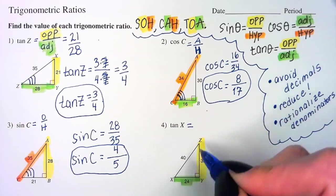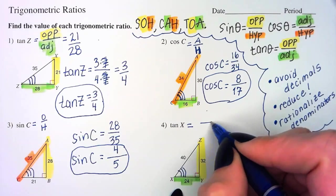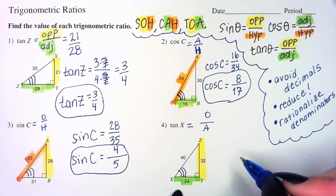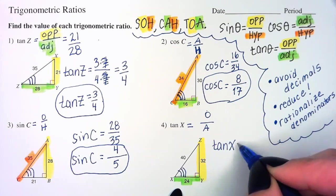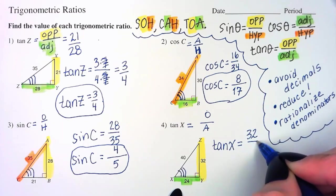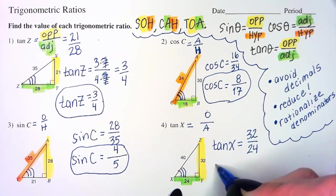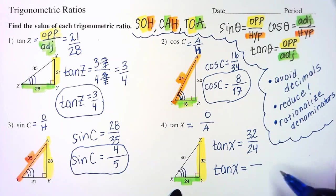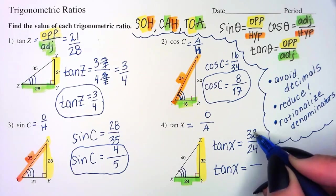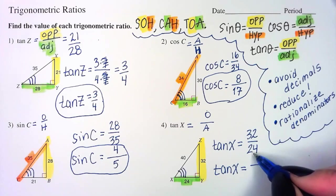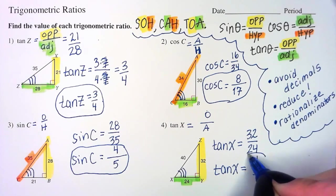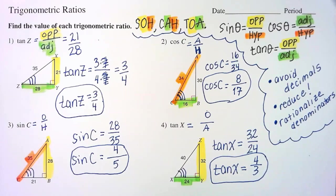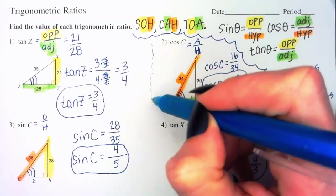Next. Tan of X. X is in the bottom left again. Very deceiving. This isn't always going to happen. Opposite over adjacent. TOA. Tan X. Opposite is 32 over adjacent, 24. What's the greatest common factor of 32 and 24? 8. So, if I can remove an 8, a factor of 8 from both 32 and 24, I'll be left with a 4 and a 3. Great. This is another reason why it's really important to know your times tables really, really well.